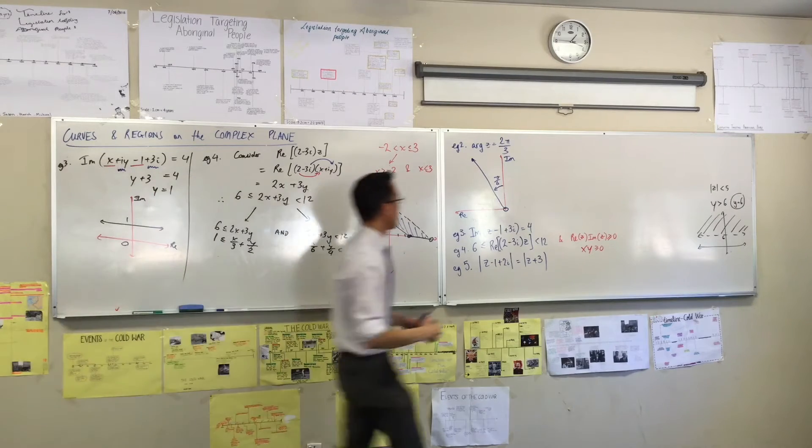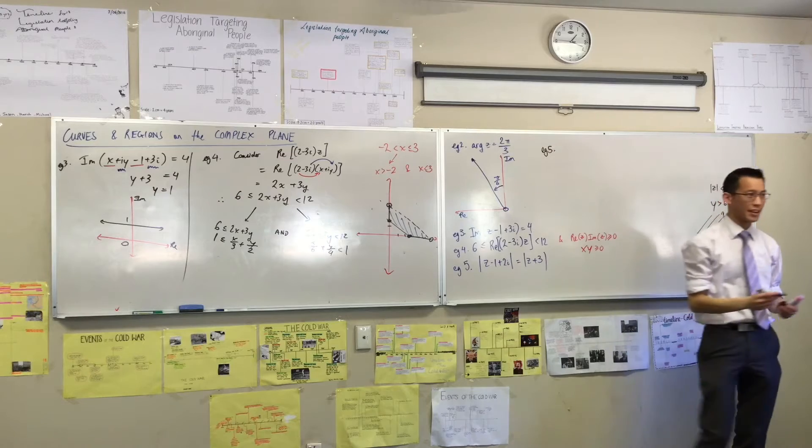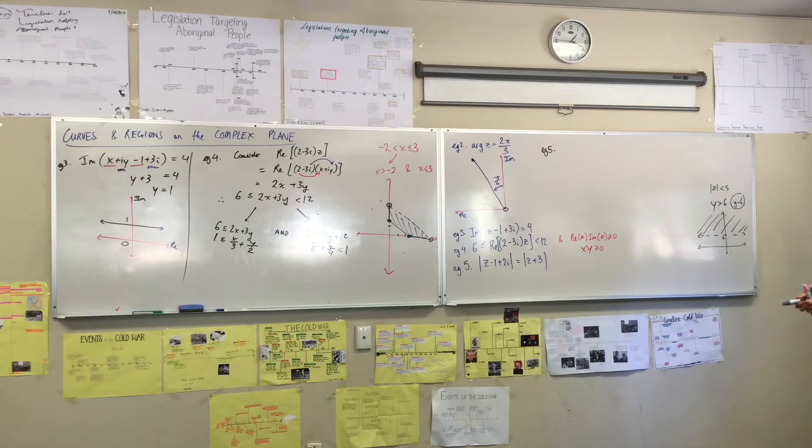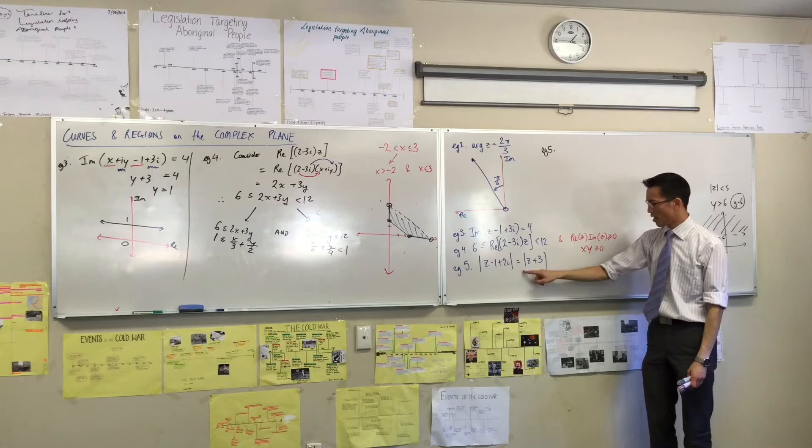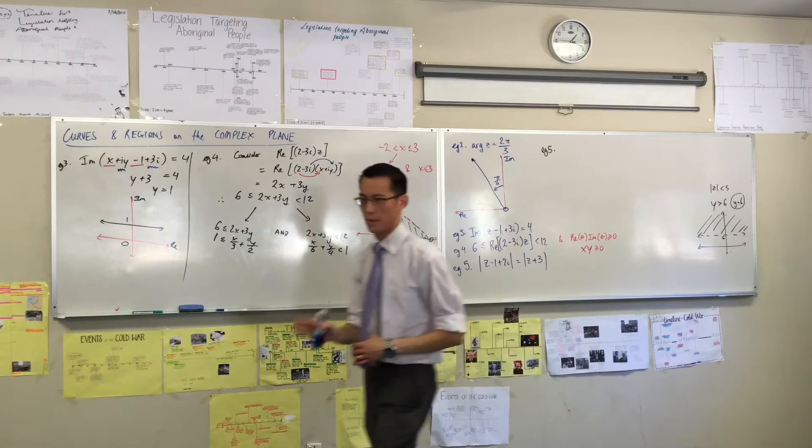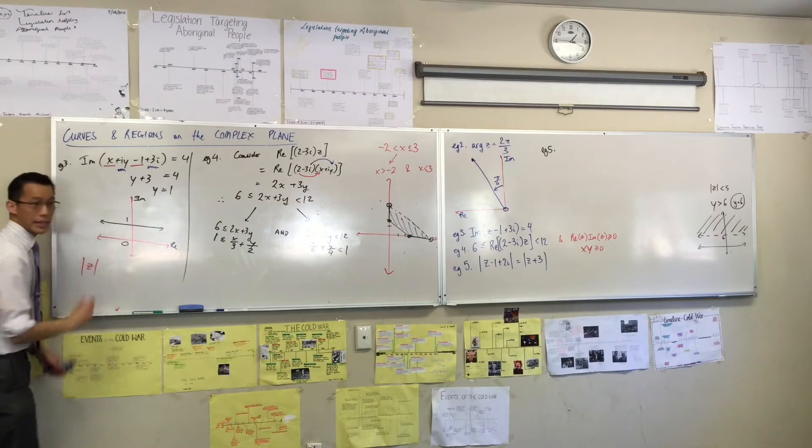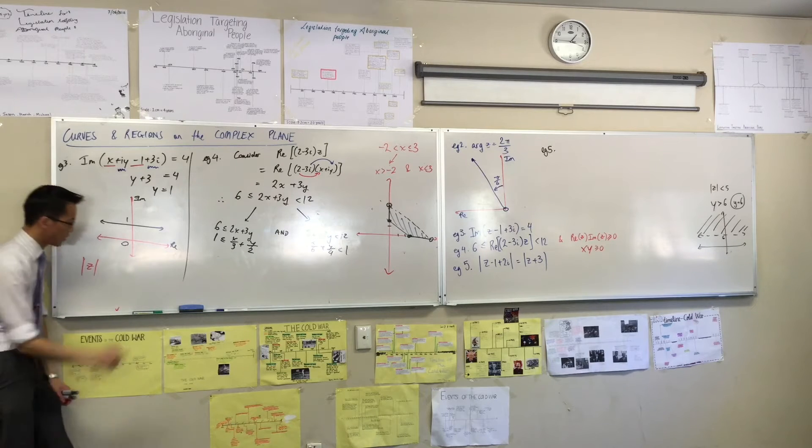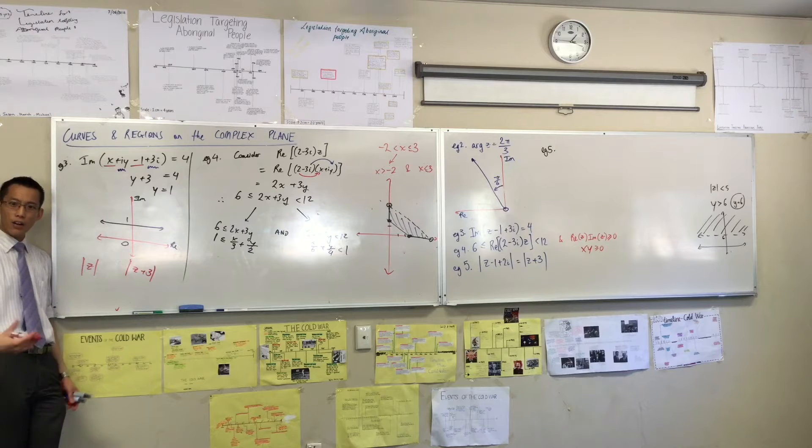Now let's have a look at number 5. Before I draw the whole thing, let's think about what it means. Just look at this guy over here, the modulus of z plus 3. Let's just think about him for a moment because we already know what this guy is. So it stands to reason that this is very similar. How is it different?